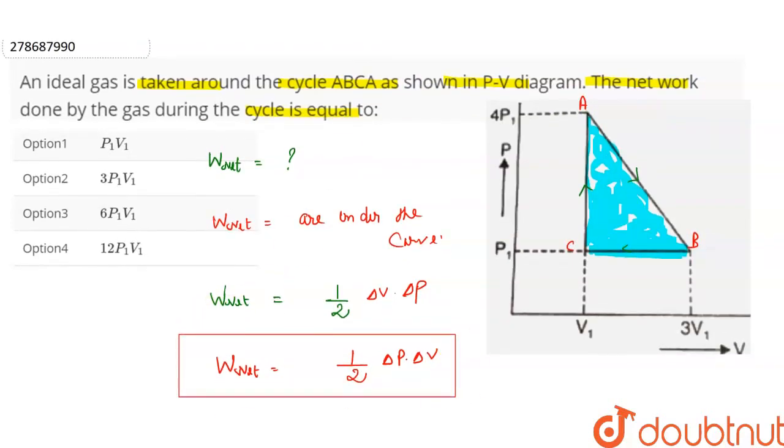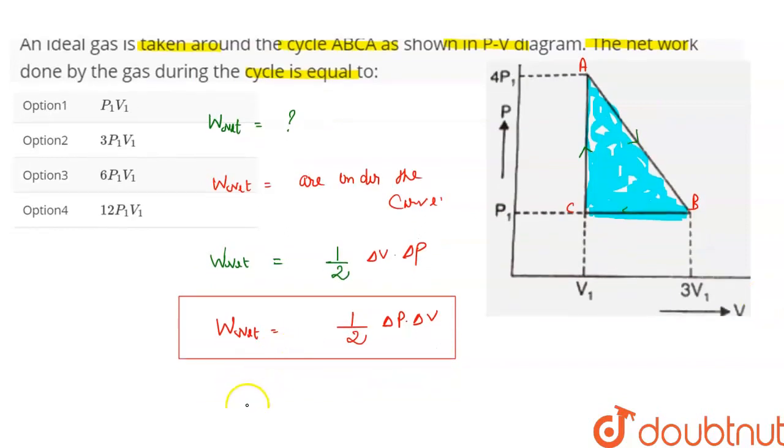So here delta p, if we see here, then net work done is 1 by 2 delta p. Here we have 4P₁ minus P₁, delta v, then here we have 3V₁ minus V₁.